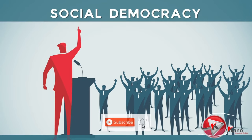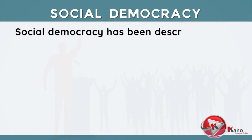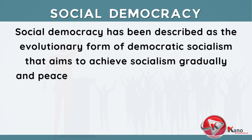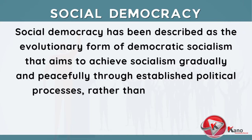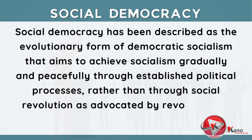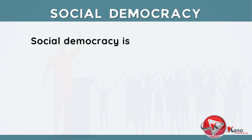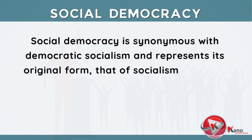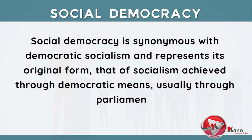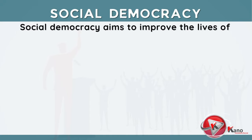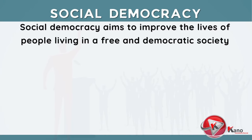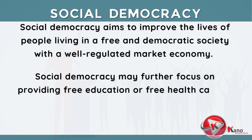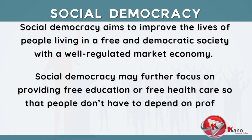The last type of democracy is social democracy. Social democracy has been described as the evolutionary form of democratic socialism that aims to achieve socialism gradually and peacefully through established political processes, rather than through social revolution as advocated by revolutionary socialists. In this sense, social democracy is synonymous with democratic socialism and represents its original form—socialism achieved through democratic means, usually through parliament. Social democracy aims to improve the lives of people living in a free and democratic society with a well-regulated market economy, and may further focus on providing free education or free health care, so that people don't have to depend on profit-making corporations.